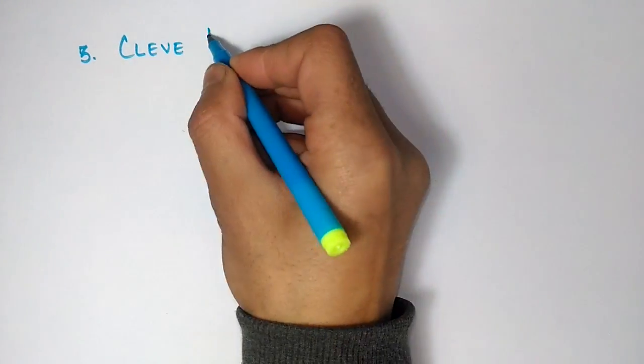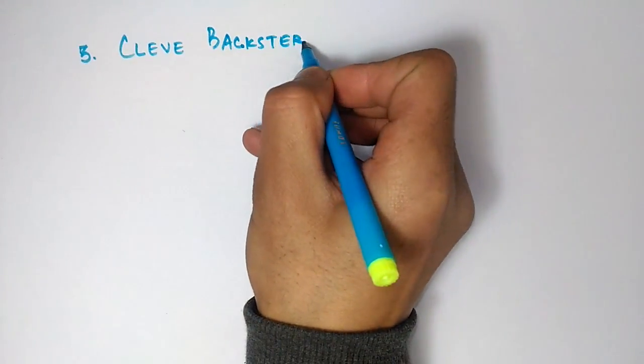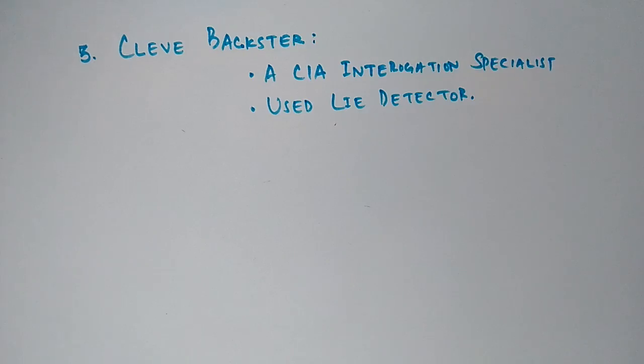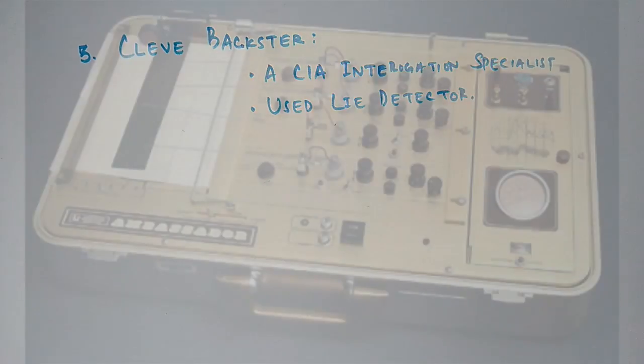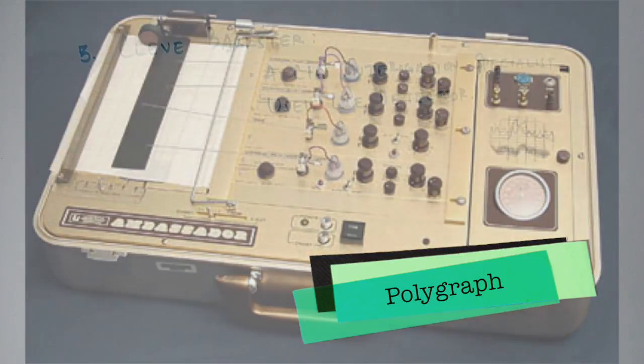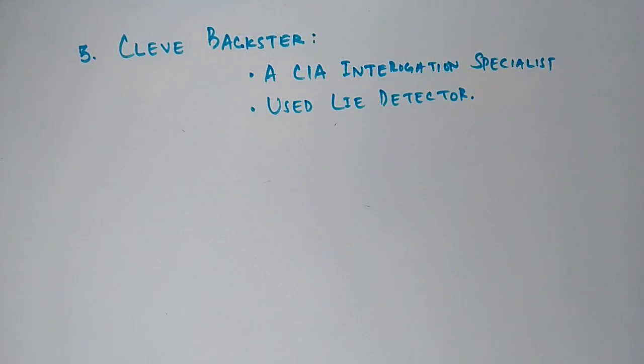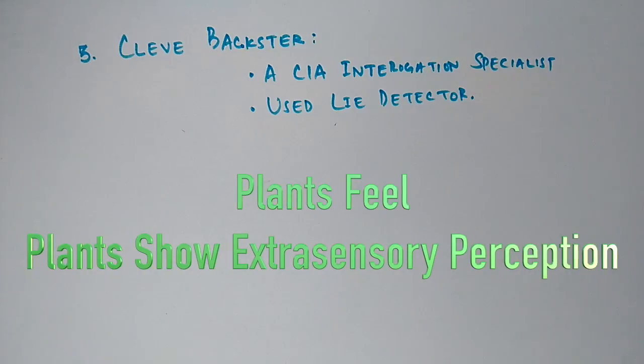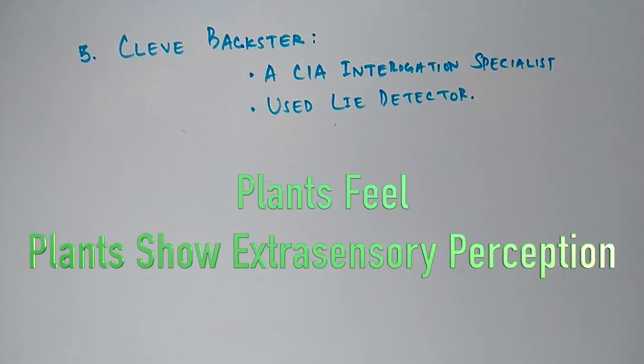It's time to install a lie detector machine to plants. Let's see if they're lying. It was Cleve Baxter, a CIA interrogation specialist. He used lie detector machines to see if plants feel or sense anything. Cleve used a polygraph referred to as a lie detector. He experimented on plants and claimed that plants feel pain and have extrasensory perception.